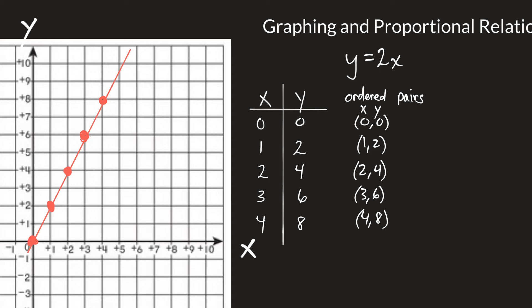There is my straight line through the points (0, 0), (1, 2), (2, 4), (3, 6), and (4, 8), and it would just keep going. The next point would be (5, 10).